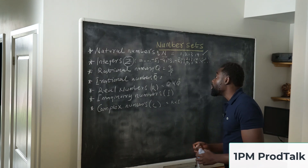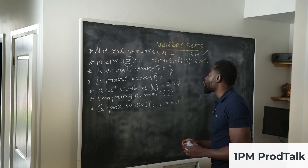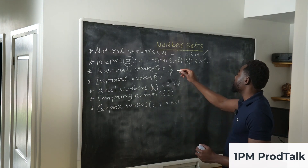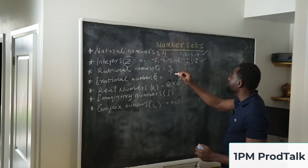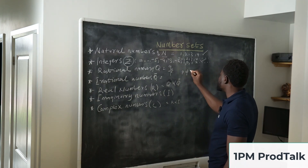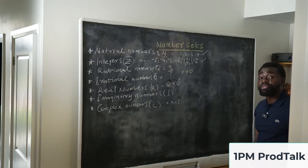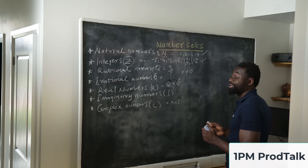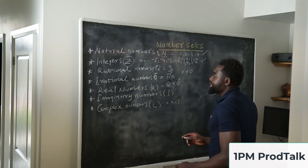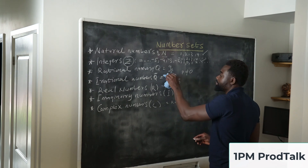The next thing is rational numbers. A rational number is any number that can be represented in the form of a quotient or a fraction — Q over P — where P must not be equal to 0, because if P equals 0, it's automatically undefined.